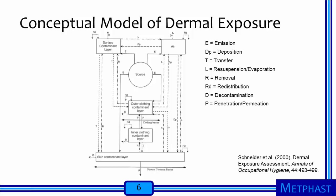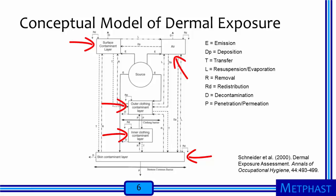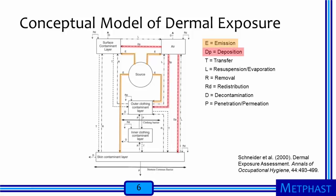This diagram from Schneider and co-authors is a conceptual model of dermal exposure. The diagram shows several compartments, starting with the source compartment where a potentially hazardous material could be released into the work environment. From there, the material may move into other compartments, including the air, a surface contaminant layer, outer and inner clothing contaminant layers, and a skin contaminant layer — contaminants on the skin that have yet to permeate into the skin. Arrows in yellow track emission from the source; arrows in red show deposition from the air onto surface, clothing, or skin contaminant layers.